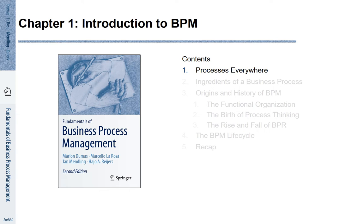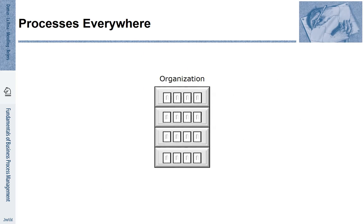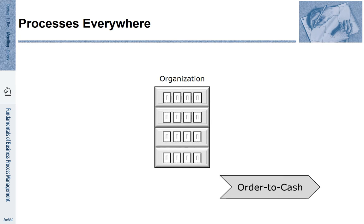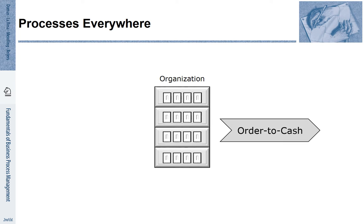Section 1: Processes are everywhere. How does a commercial organization work? Commercial organizations offer goods and services to the market which their customers buy. The way how they do that is called the order-to-cash process.